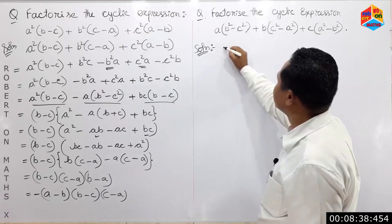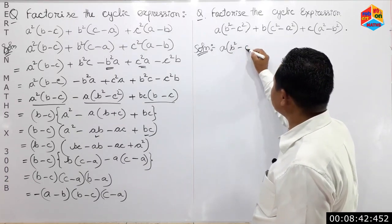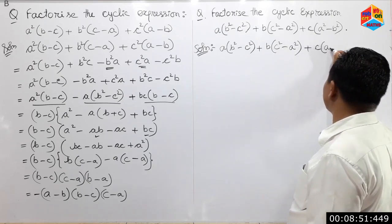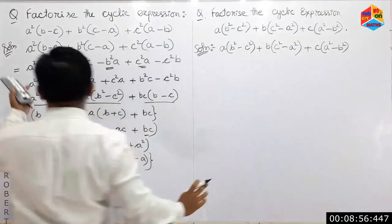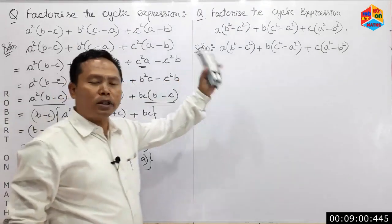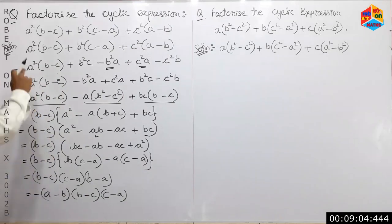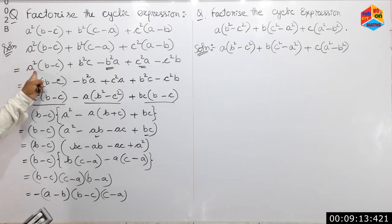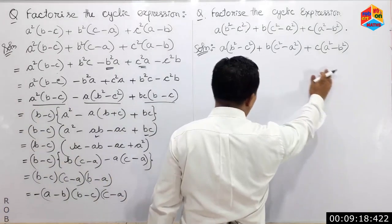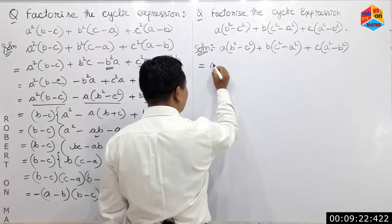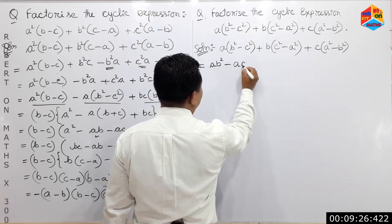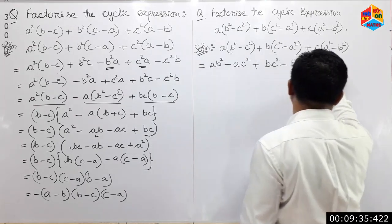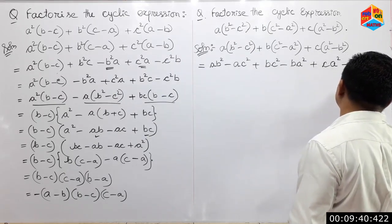The solution: I am going to write a(b-squared minus c-squared) plus b(c-squared minus a-squared) plus c(a-squared minus b-squared). The scale of a-squared against b-squared — if you want to multiply it, you can multiply: ab-squared minus ac-squared plus bc-squared minus ba-squared plus ca-squared minus cb-squared.